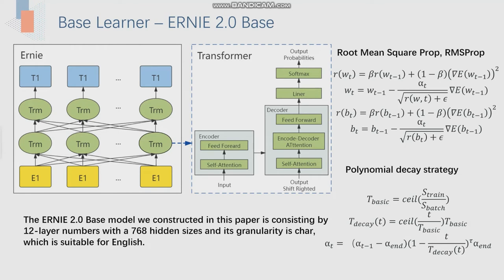And for the base learner, we used ERNIE 2.0 base with 12 layers and a hidden size of 768. The learning rate adaptive adjustment strategy we used is the root mean square propagation method, and the global learning rate of each epoch is determined by the polynomial decay strategy.